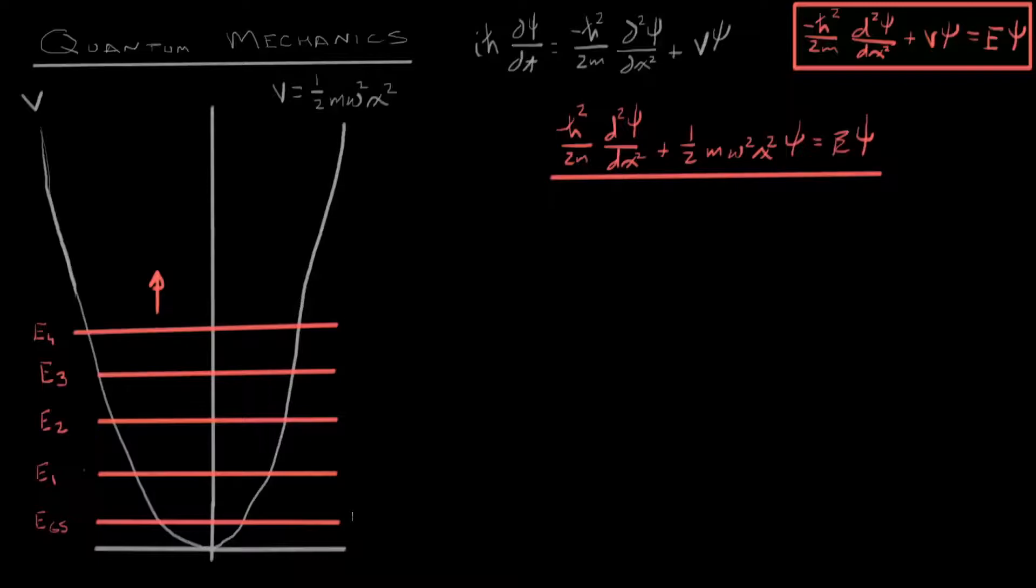And in fact, the energy for the ground state is h bar omega over 2, first state, 3 h bar omega over 2, 5 h bar omega over 2, and so on. And as a matter of fact, if we label the state, say n equals 0, n equals 1, n equals 2, etc., and if we label things this way, then the energy at any point is going to be n plus 1 half times h bar omega.